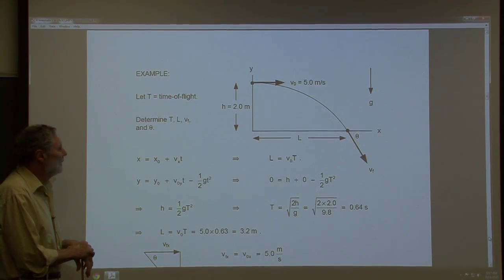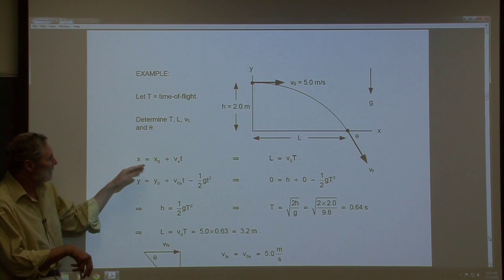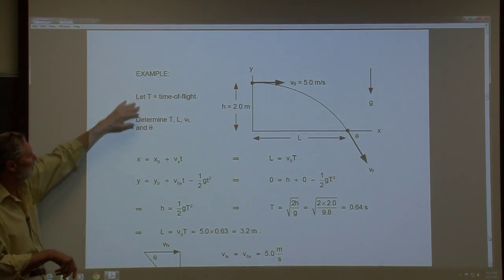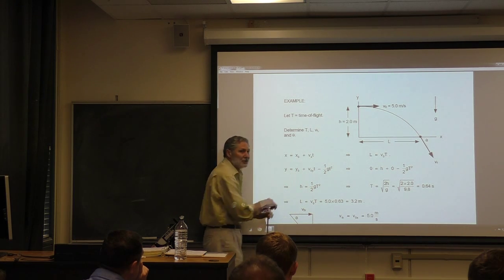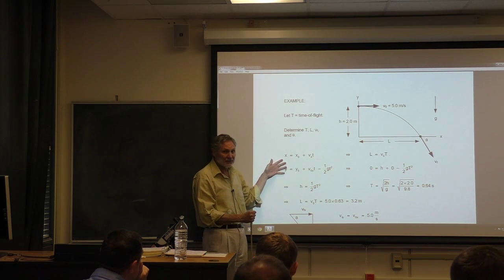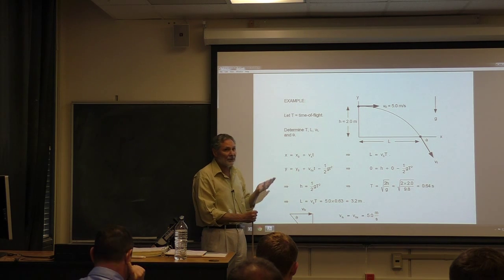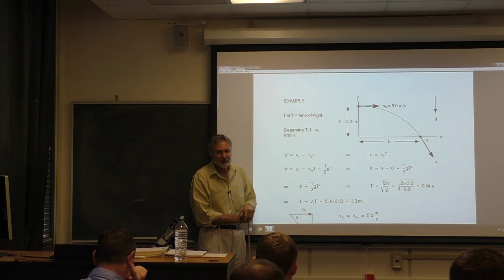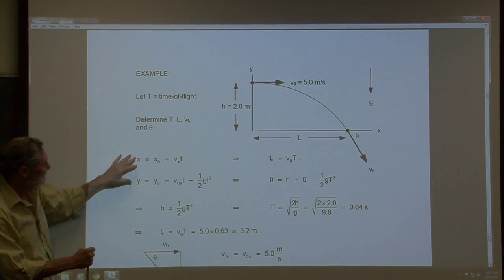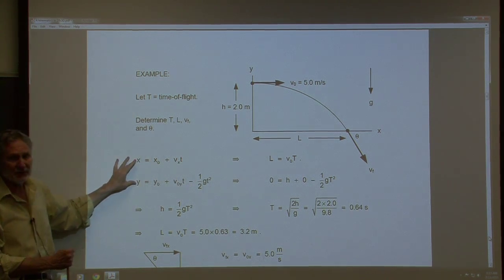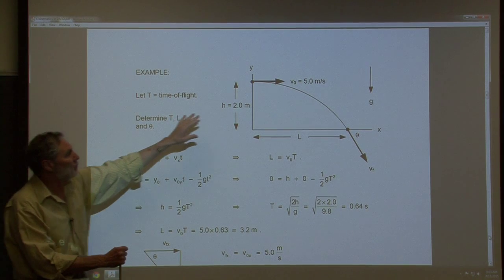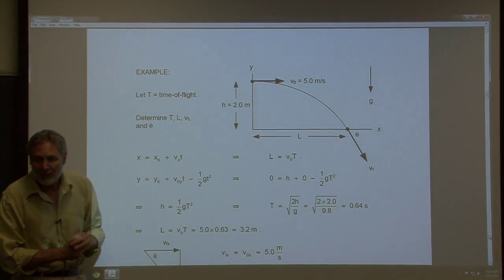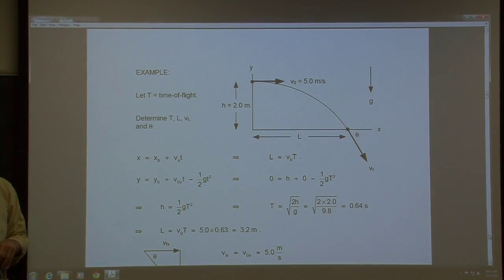So what do we know? This is projectile motion — there's no acceleration in the x-direction. Here are the general projectile motion equations, absolutely general for any projectile motion, neglecting air resistance. We specialize them to our particular problem. In the x-motion, x₀ = 0, so the x-position simplifies. The velocity in the x-direction is constant at v₀. Applying this over the whole motion, x becomes L and t becomes the time of flight. We have one equation and two unknowns, so we need to do more.